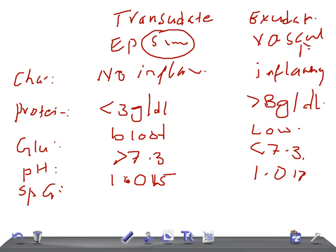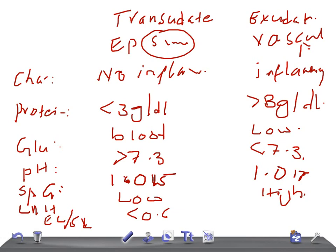LDH is most often asked in USMLE examinations. LDH is low in transudate and high in exudate. The effusion LDH to serum LDH ratio is less than 0.6 in transudate because serum LDH is higher. In exudate, the ratio is more than 0.6 because the LDH level in the effusion is very high.